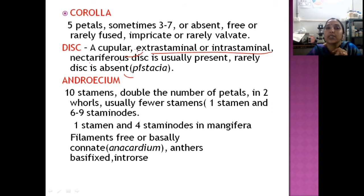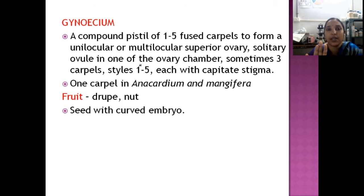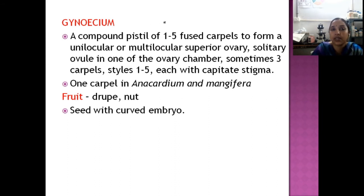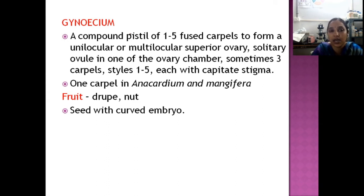Two important features to remember are: the extra- or intrastaminal nectariferous disc, and the presence of staminodes. The gynoecium is monocarpellary, usually unilocular — the unilocular condition is very important. The fruit is a drupe or a nut. In Anacardium and Mangifera, only one carpel is present. The seed is a nut, and another peculiar feature is seeds with a curved embryo.